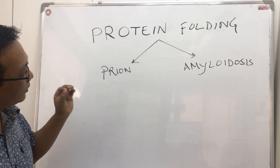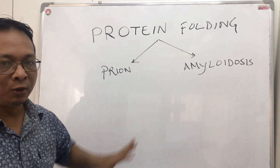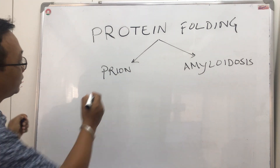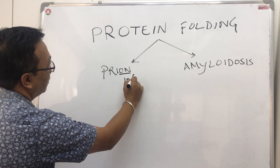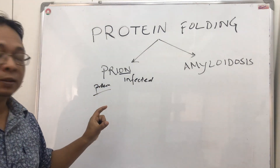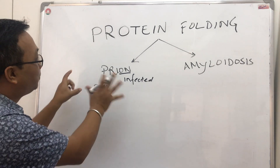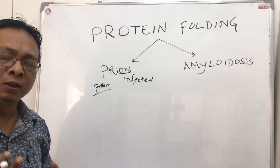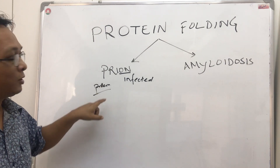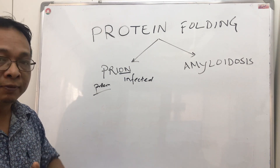Today we'll discuss protein folding and how it leads to prion disease and amyloidosis. A prion is an infected protein — and this infected protein can infect other proteins, which is why we call it a prion. This is not a bacteria or a virus, but a protein that can cause neurodegenerative disease, affecting the brain.